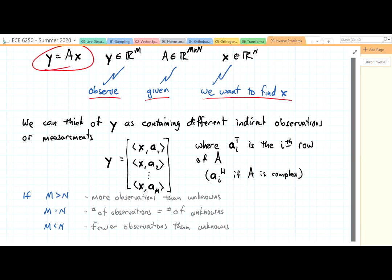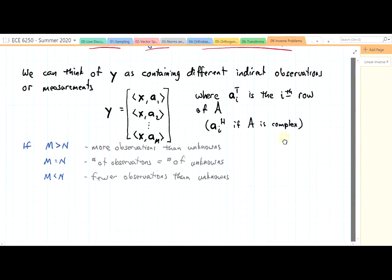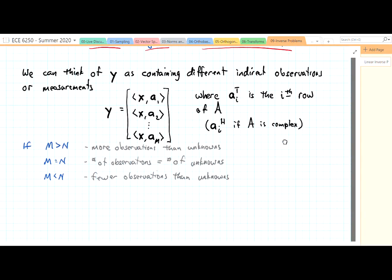Well, let's start with the easy case where m equals n and A inverse exists. Then the problem becomes very trivial. Then x is just equal to A inverse y.